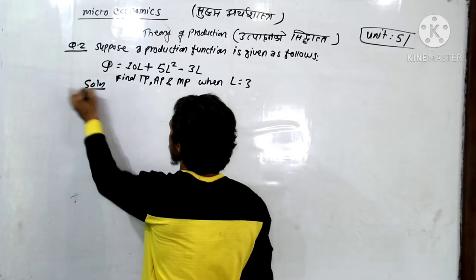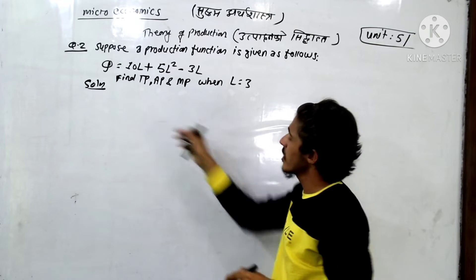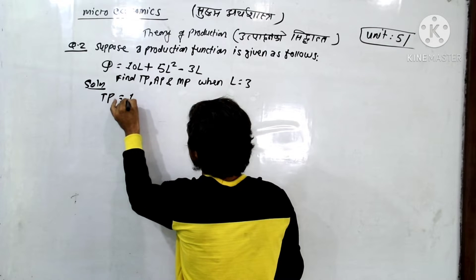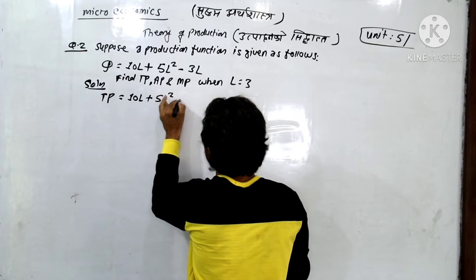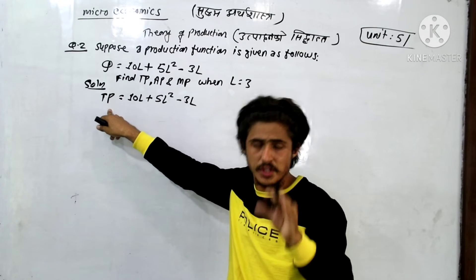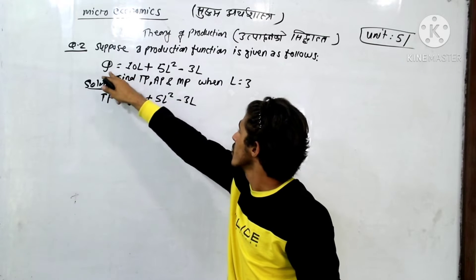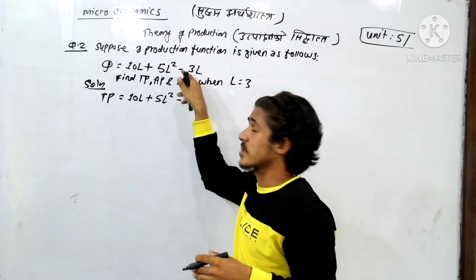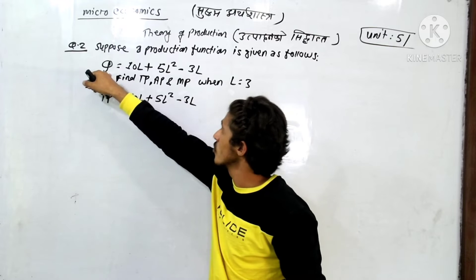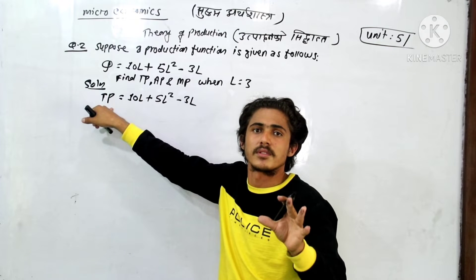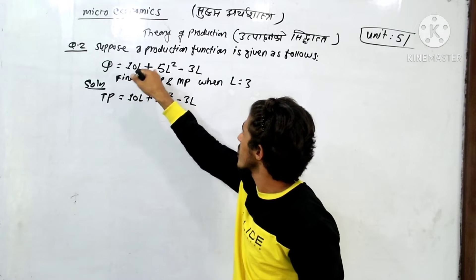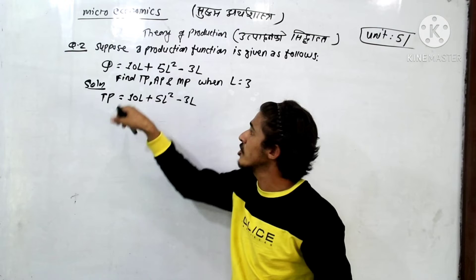TP is equal to 10L plus 5L squared minus 3L cubed. This given function, a production function, is total production. Q is the total production function.